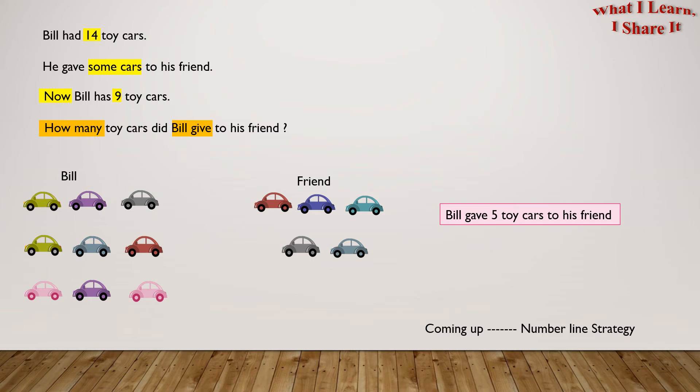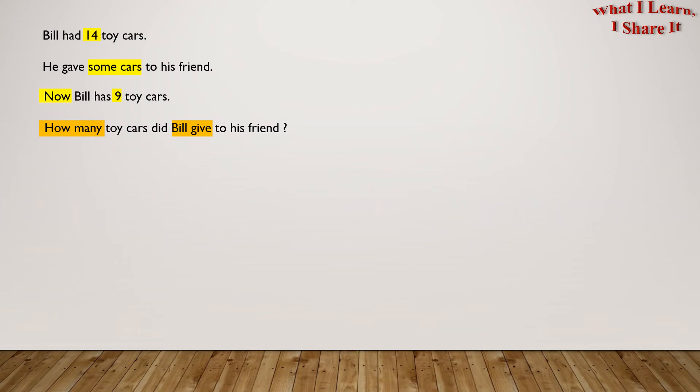Let's discuss it. We know that when some things are given away to someone else, we use subtraction. So let's write a number sentence using subtraction: 14 minus something equals 9. Let's make a number line to solve it.